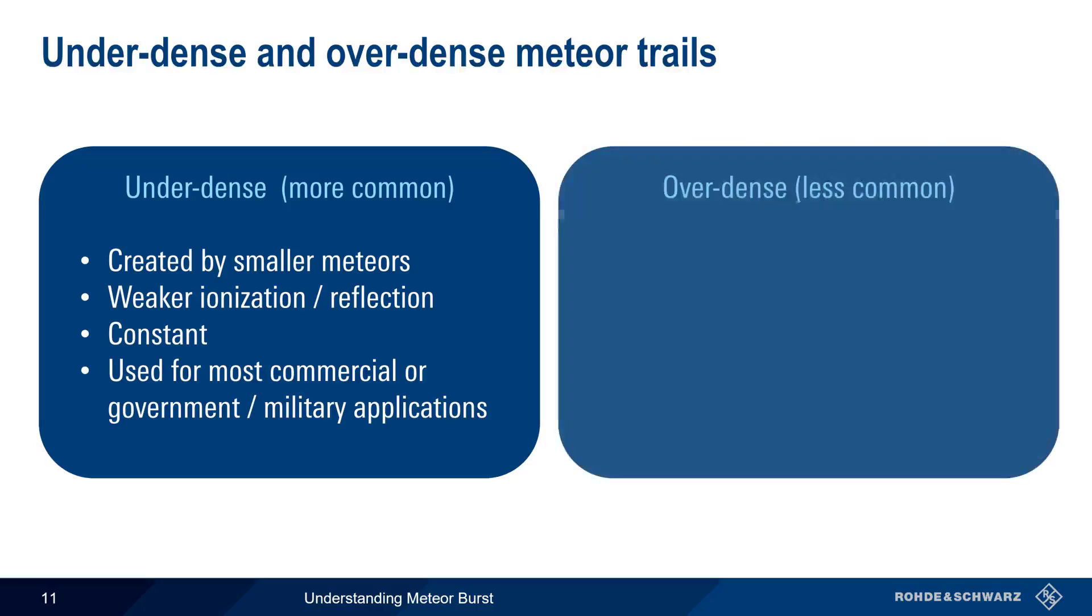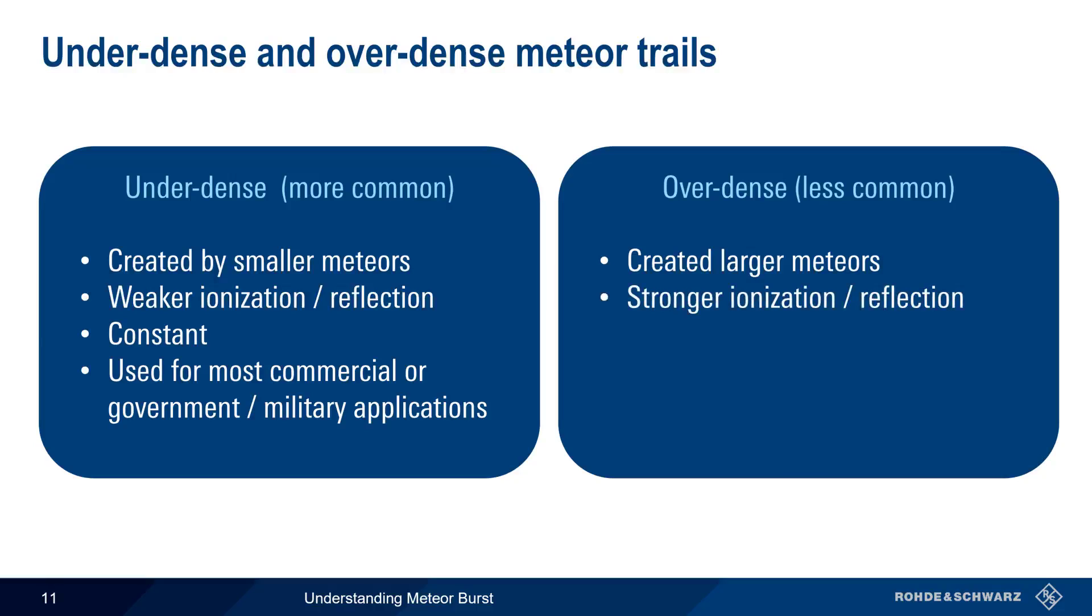Over-dense trails are less common because they are created by less common larger meteors. Larger meteors produce trails with stronger ionization and signal reflections, which is always desirable. Unfortunately, larger meteors also appear at random, making them less suitable for systems that require reliability or consistency of operation. Therefore, over-dense trails are primarily of interest in amateur radio communications.